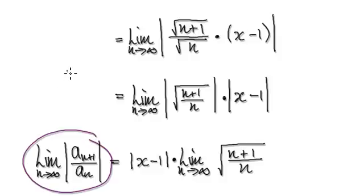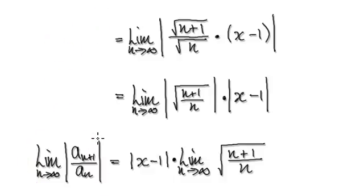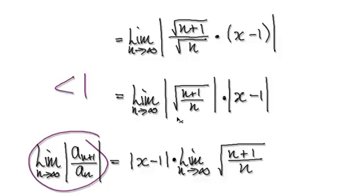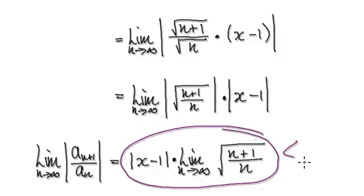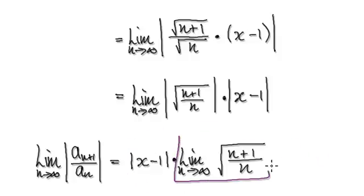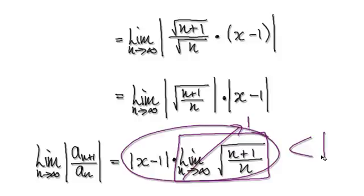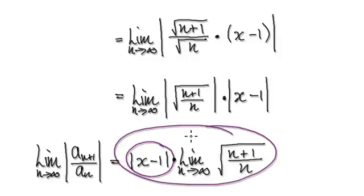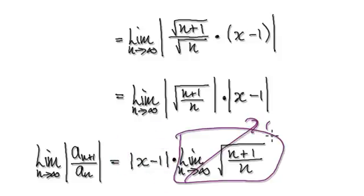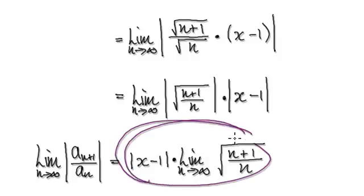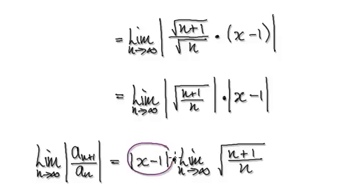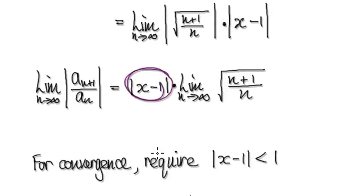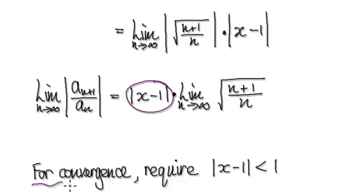When it comes to the ratio test, for convergence we require the limit to be strictly less than 1. If it's greater than 1, it diverges; if it equals 1, it's inconclusive. Since as n heads to infinity the limit of that block is 1, we just need to make this remaining expression less than 1. The minute that part is less than 1, the whole thing is less than 1, because that block is 1. So for convergence, we require this to be less than 1.